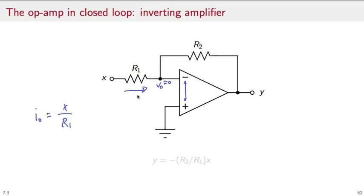This current will not be able to flow into the operational amplifier because of the second law, so it will have to flow into this resistor here. Therefore, the output voltage will be just the voltage drop over R2 caused by I0. So Y is equal to minus R2 over I0, which gives us the final input-output relationship for the inverting amplifier. The output is a fraction of the input with a change of sign.